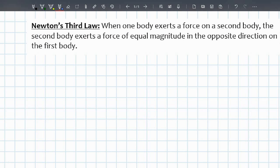But the definition is when one body exerts a force on a second body, the second body exerts a force of equal magnitude in the opposite direction on the first body. How I actually learned it in school was when body A exerts a force on body B, body B exerts a force on body A. So it's basically the same thing.